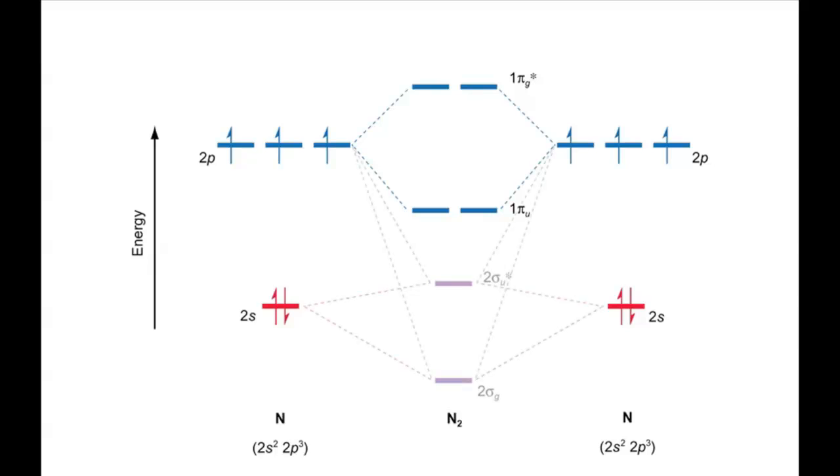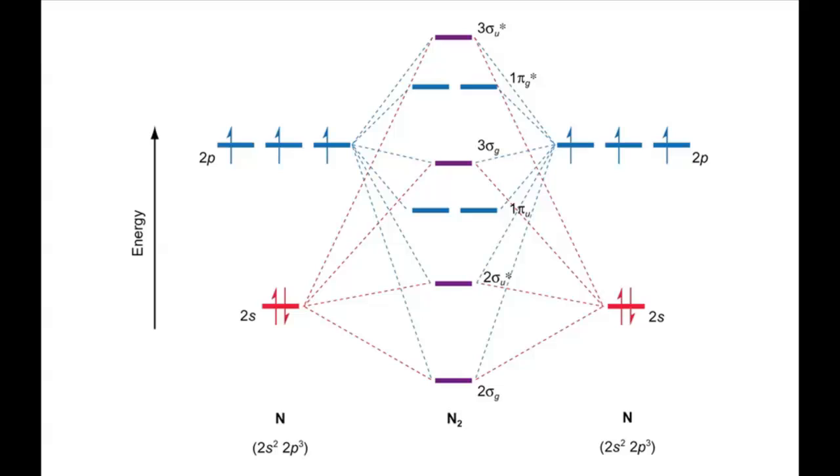However, on adding in the sigma orbitals, you can see that the three sigma-g orbital lies above the one pi-u orbital in energy, in contrast to oxygen and fluorine. The most important effect of SP mixing is therefore to change the order that these two orbitals are filled in.